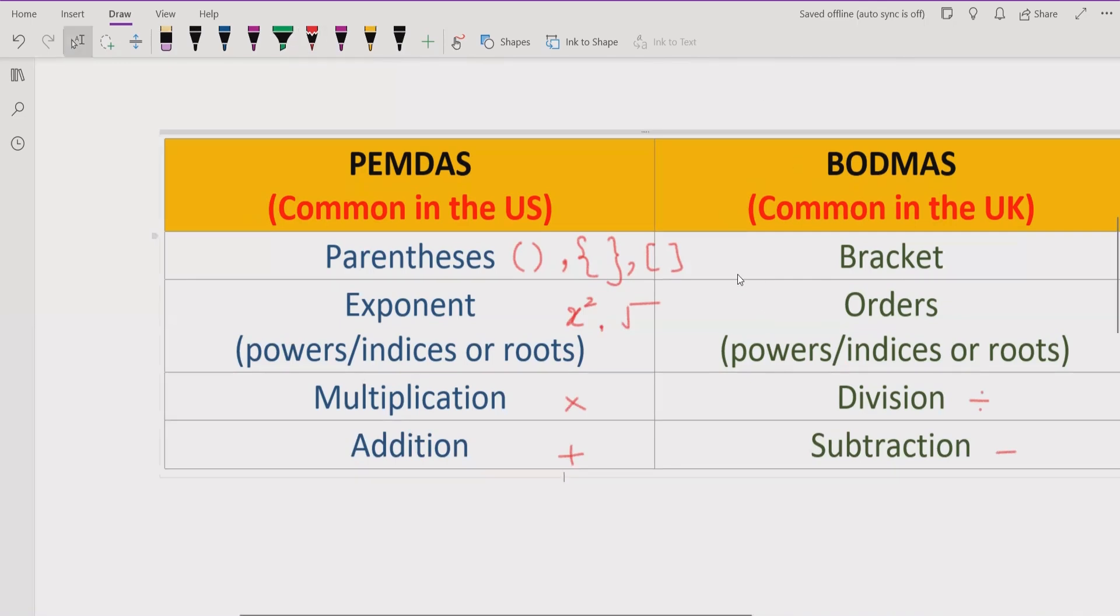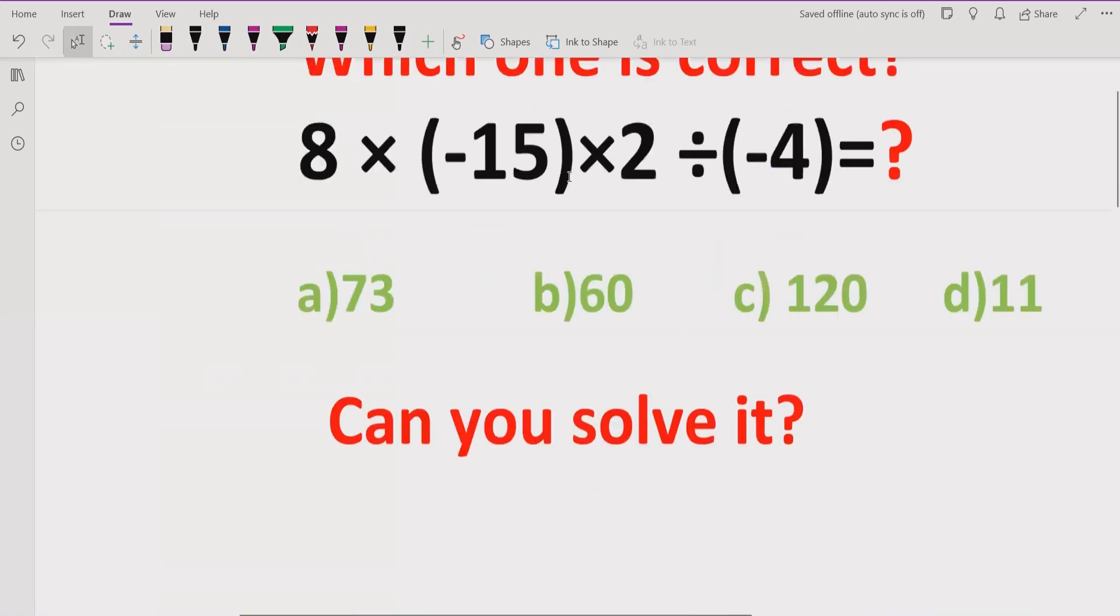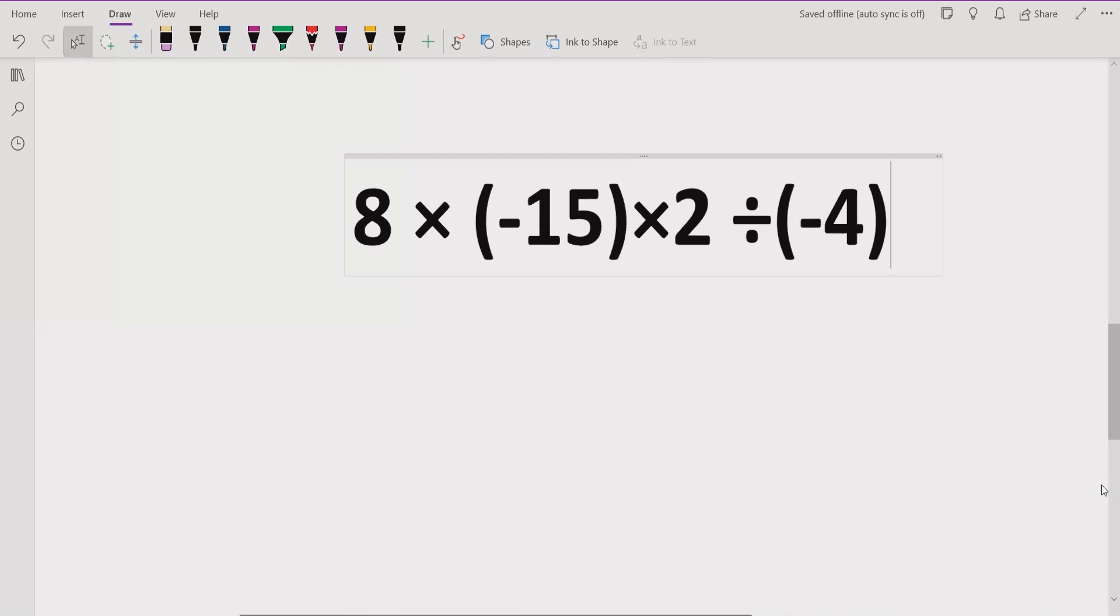Now we have to move forward to solve this expression. As you can see on the screen, you have 8 × (-15) × 2 ÷ (-4). We have to solve this expression using PEMDAS or BODMAS method.